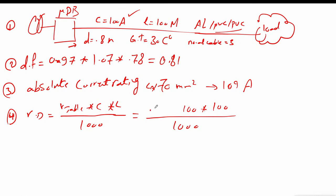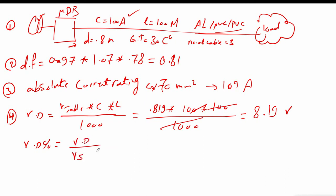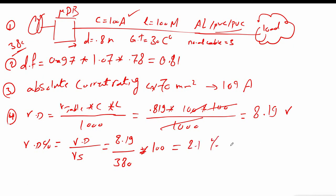The voltage drop value from the table is 0.819 mV/A·m. The total voltage drop equals 8.19 volts. As a percentage: 8.19 ÷ 380 × 100 = 2.1%, which is acceptable as it is less than the 5% limit in the electrical code.